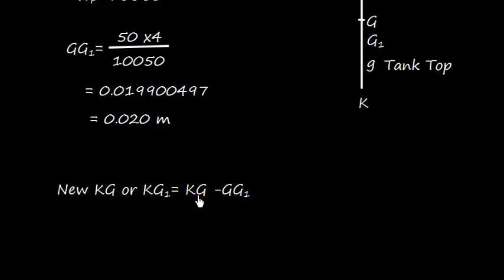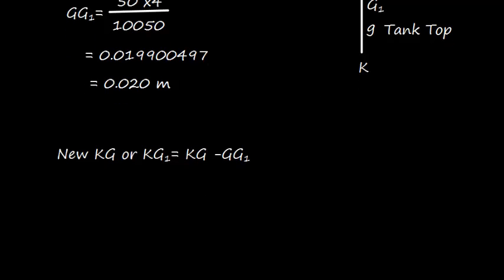Now the new KG, or KG1, will be KG minus GG1. We need to subtract this, and we get the value as 6 minus 0.020.